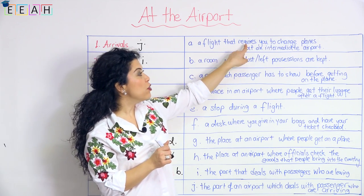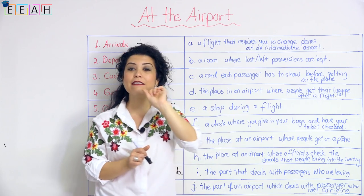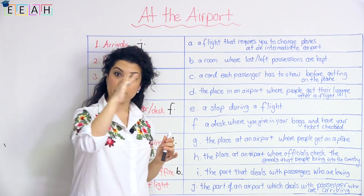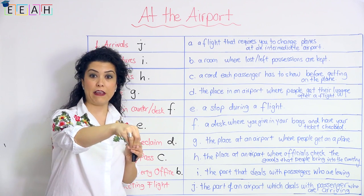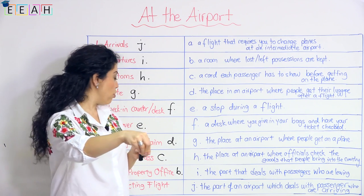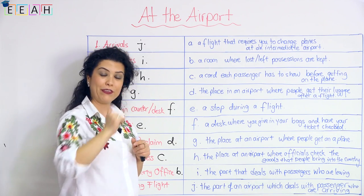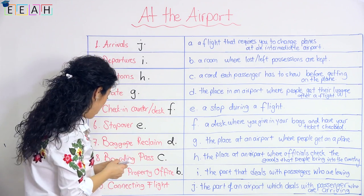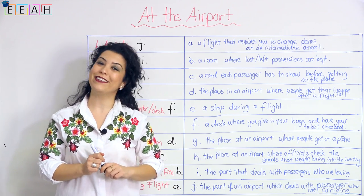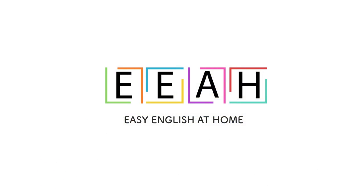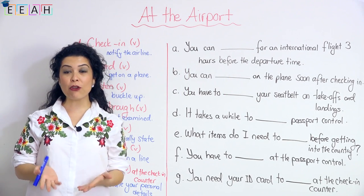The last vocabulary item: 'connecting flight.' A connecting flight is a flight that requires you to change planes at an intermediate airport. For example, if you're flying to Melbourne and your first stopover is Doha, then you have a connecting flight from Doha to Melbourne. That matches with A, and that was the last one.